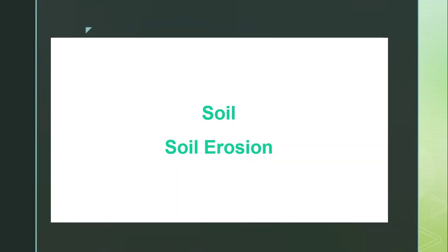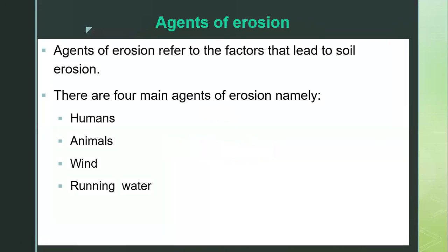Hello everyone, welcome to this session. Our topic is soil, and we're still discussing soil erosion. So far in our first video, we covered the concept of soil erosion and the various agents of soil erosion. There are four main agents of erosion: humans, animals, wind, and running water. We've already covered humans, so in this video I'm going to discuss the other two main agents of erosion.